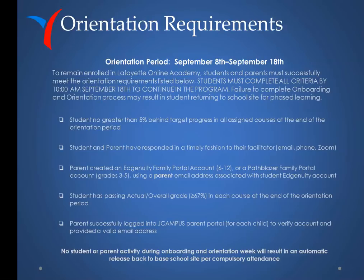The student must be no greater than 5% behind target progress in all assigned courses at the end of the orientation period. The student and parent must have responded in a timely fashion to their facilitator. The parent must have created an Edgenuity Family Portal account for students in grades 6–12, or a Pathblazer Family Portal account for students in grades 3–5, using a parent email address associated with the student's Edgenuity account.